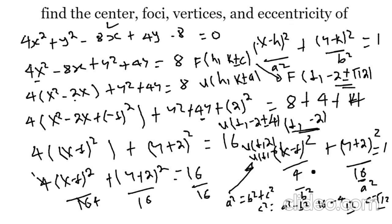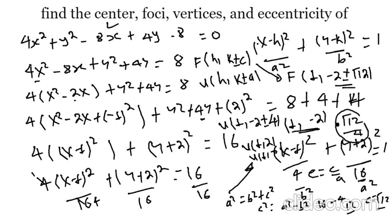Eccentricity equals c over a. The c value is the radical of 12. So eccentricity equals radical 12 divided by a — the a value is 4.